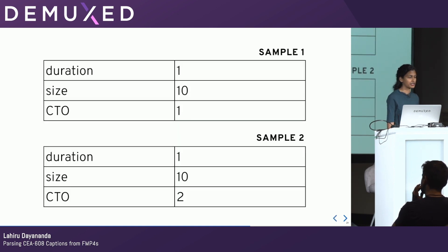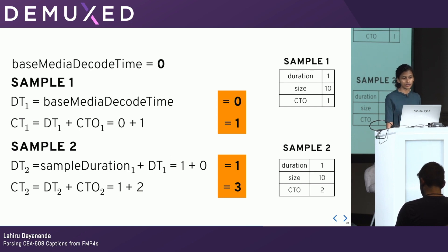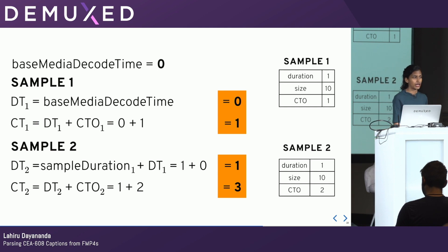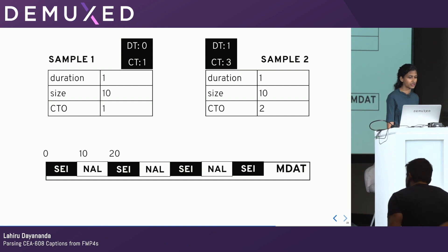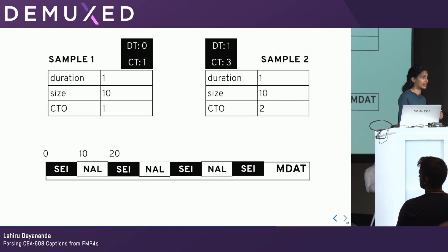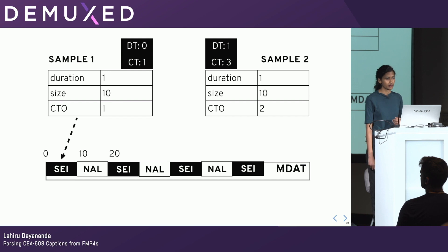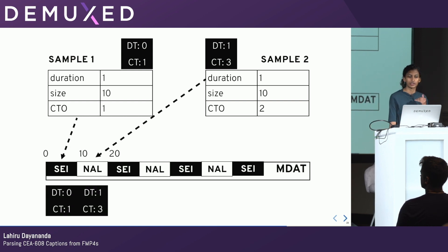These two samples have the same duration and size, but a different composition time offset. If we had a base media decode time of zero, sample one has a decoding time of zero and a composition time of zero plus sample one's composition time offset, which is one. Sample two would use the previous sample's duration of one and the previous decoding time of zero to give a new decoding time of one. Adding sample two's composition time offset gives us a composition time of three. Based on this, we can build a timeline of timestamps. We match that to data in the MDAT based on sample sizes — sample one has a size of 10, and our SEI happens to be 10 bytes into the MDAT. Sample two matches the second NAL in the MDAT, so we can give each NAL unit the timing information for the sample it matches.